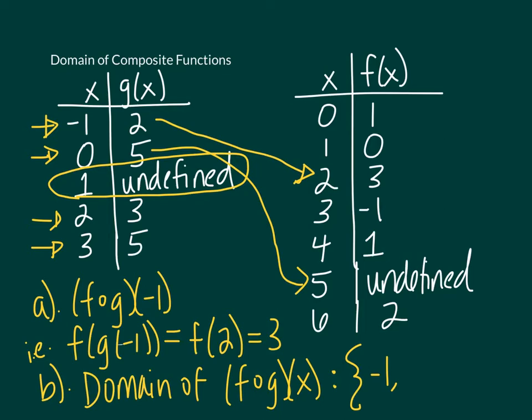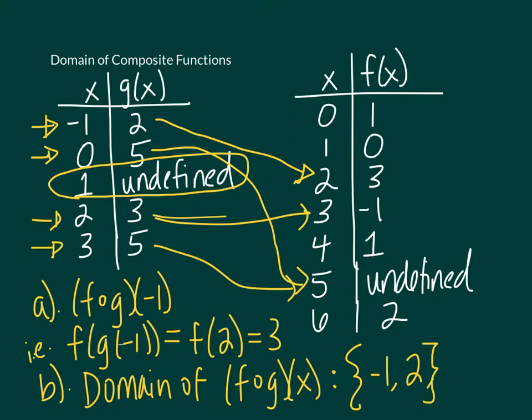Let's check 2. It gets paired with 3 by function g, and 3 gets paired with negative 1 by function f, which means 2 will make it into the domain. Lastly, we check input 3. It is in the domain of g and gets paired to 5 by g, but 5 does not get a pair with function f — it's undefined. So it will not make it all the way through and will not be in the domain. So the domain is just going to be negative 1 and 2.